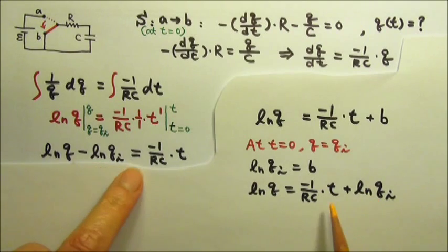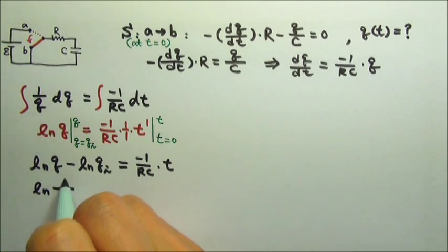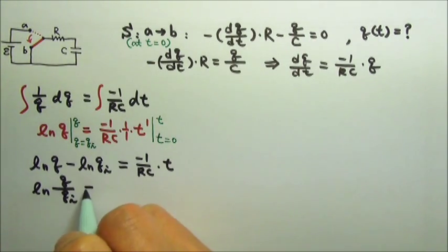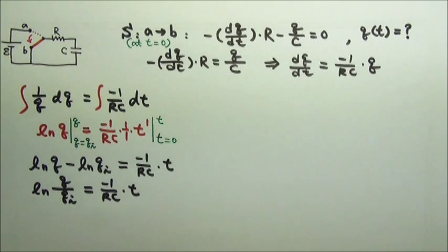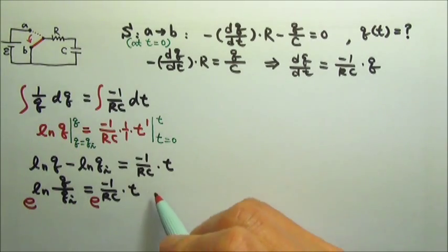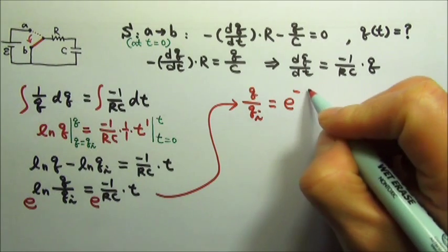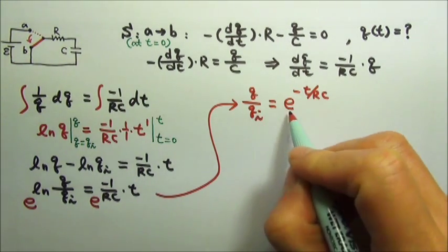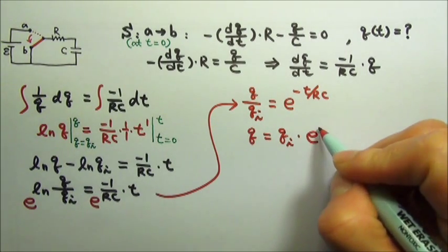Natural log q minus natural log qi equals natural log of q over qi, and this equals negative 1 over rc times t. To find q as a function of time, we take e to both powers. Since e to the natural log x is x, the left side gives q over qi, and the right side gives e to the negative t over rc. Multiplying both sides by qi, the charge as a function of time is the initial charge times the exponential decay.